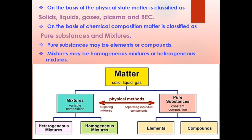On the basis of chemical composition, matter is classified either as pure substances or mixtures. This classification according to composition we are going to discuss in detail in the next chapter. Pure substances are made up of only a single type of particle; they can either be an element or a compound. Mixtures have variable composition and may be homogeneous — also known as solutions — or heterogeneous.